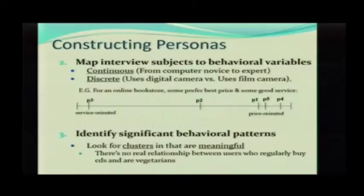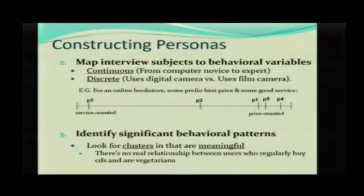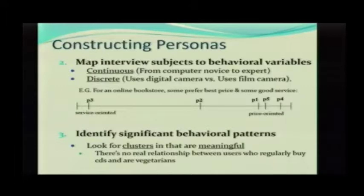You want to take your variables and for each one build something where each piece is a different person you've interviewed, and this happens to be one variable you've determined is important based on your research. Now you need to figure out where your people fall — where will my primary persona be, who will be my secondary persona? Let's look at an example of an online bookstore.